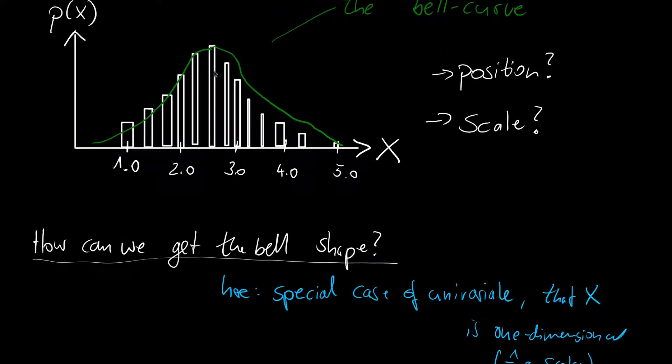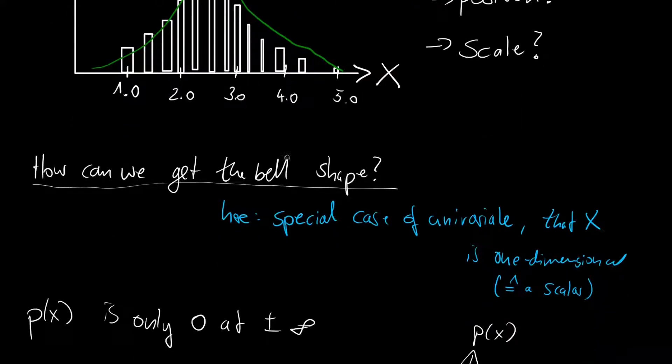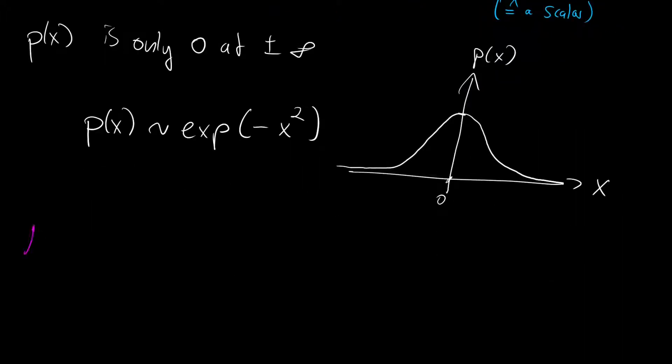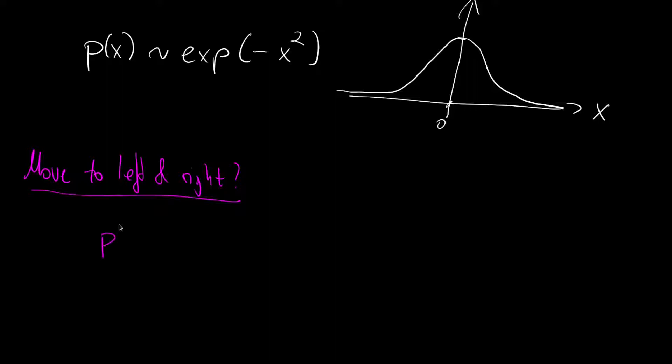But if we go back to the distribution of the grades we see it is not centered around 0. It is centered around 2.5. How can we center it differently? And I would call this move to left and right. And probably the most easiest way to do this is similar as you would do is also with general function. So we augment the x that we have in here with a shifted x. So we say in this case p of x is proportional to the exponential of minus and then we replace x with a shifted x and that will be x minus mu and we call this shift the mu.